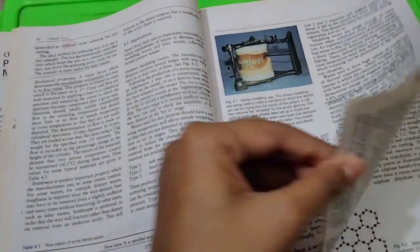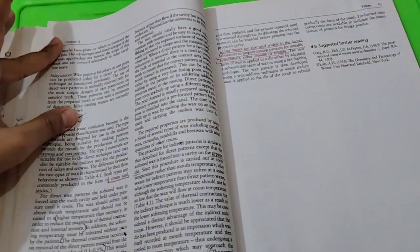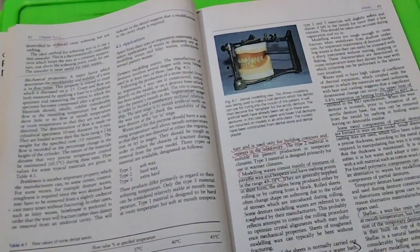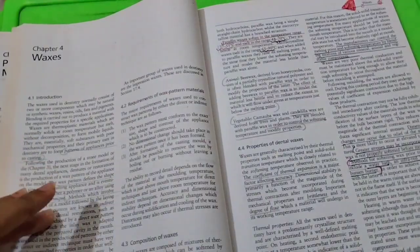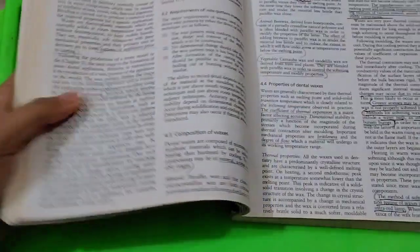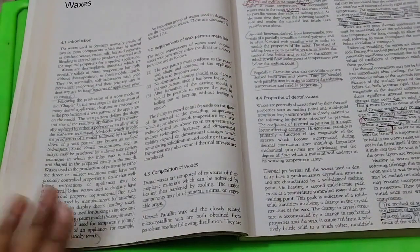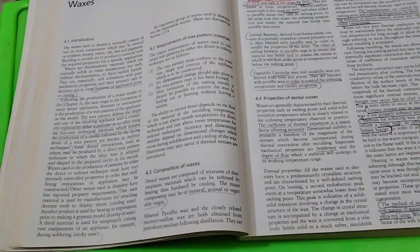The two waxes which are most important: one is inlay waxes, one is modeling waxes. Then we have all the types of waxes which include sticky waxes, carding waxes, and boxing waxes which are all written here.